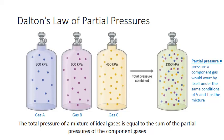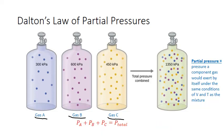If we were able to separate each gas out, we'd find that the particles of gas A are still exerting a pressure. It's less pressure than the total mixture because there are fewer particles, but the particles of A are still colliding with the sides of the container providing pressure. It's the same with individual gas B and individual gas C. And if we were able to add up the individual pressures of each gas A, B, and C, it would give us the total pressure of the mixture.